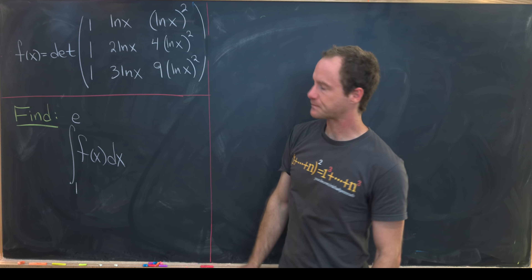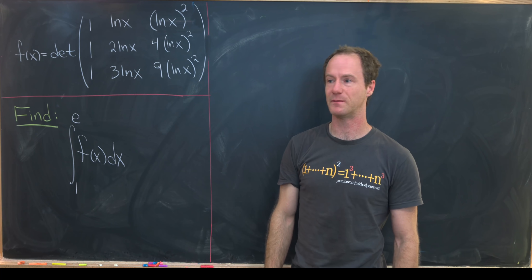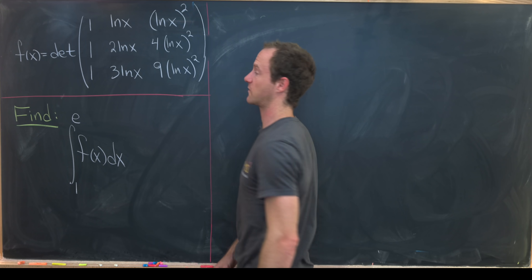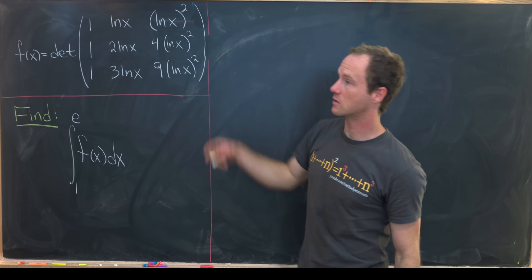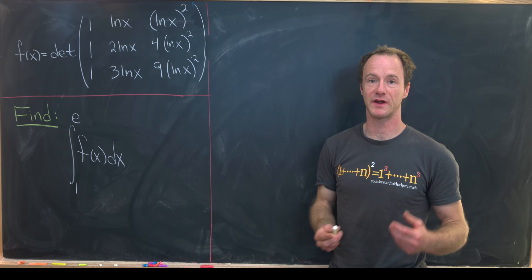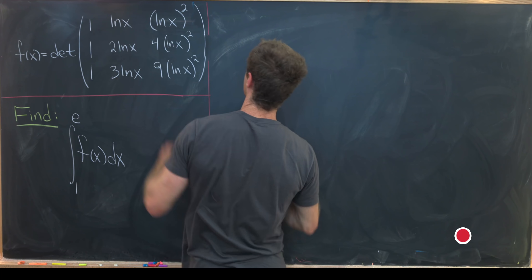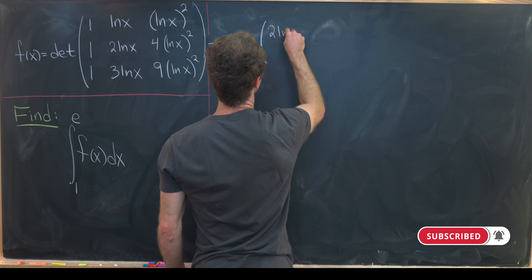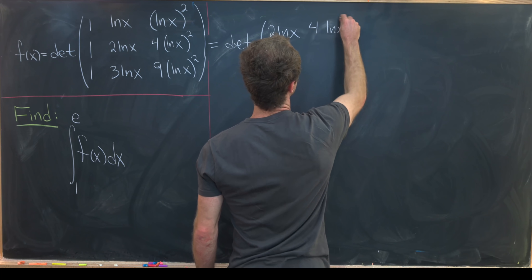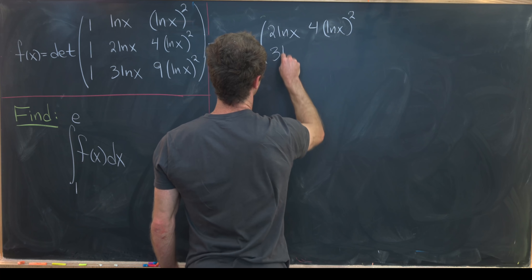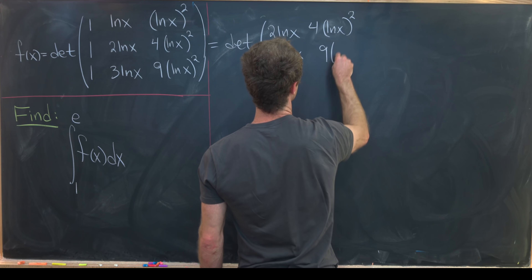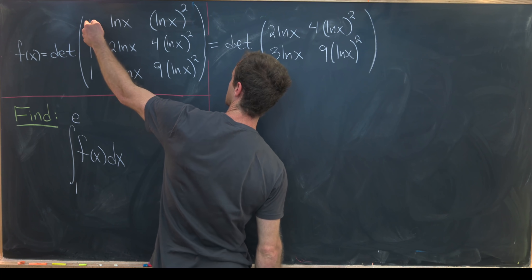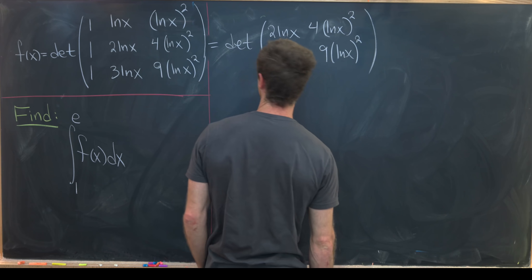We're going to calculate this determinant by cofactor expansion — crossing out the first column and successive rows to take determinants of the appropriate 2 by 2 submatrices. Crossing the first column and first row gives us 1 times the determinant of the submatrix with entries 2·ln(x), 4(ln x)², 3·ln(x), and 9(ln x)².